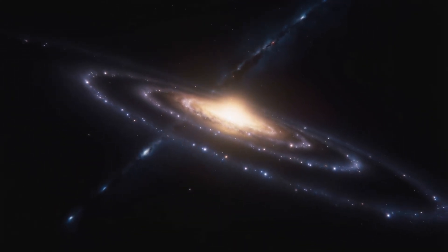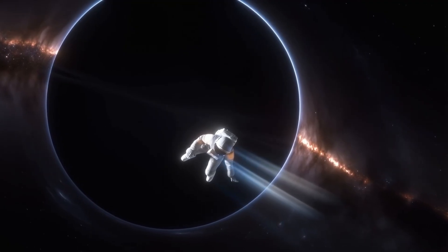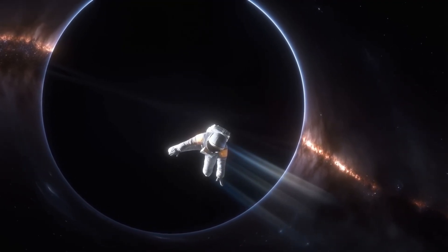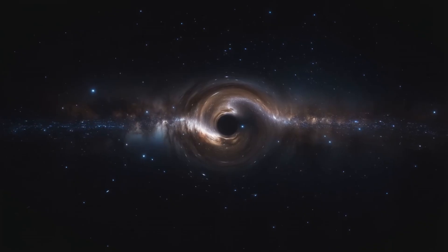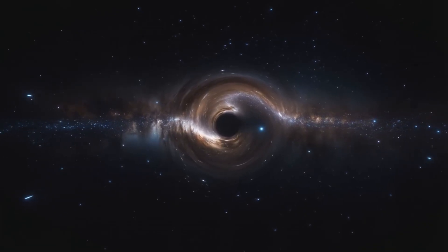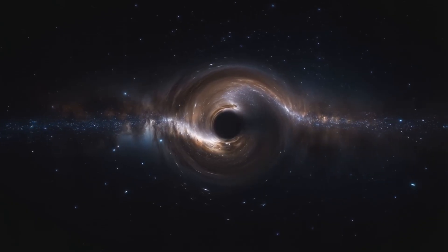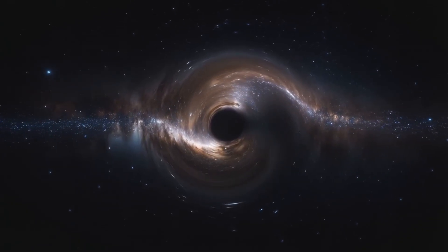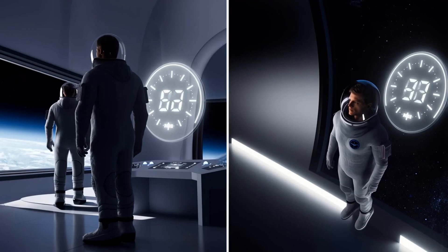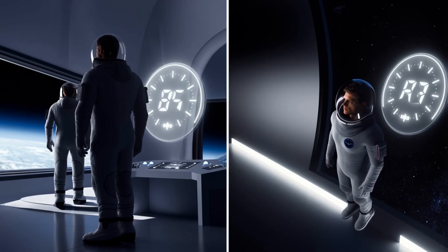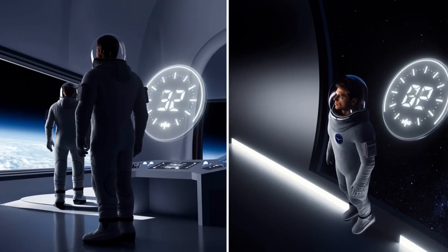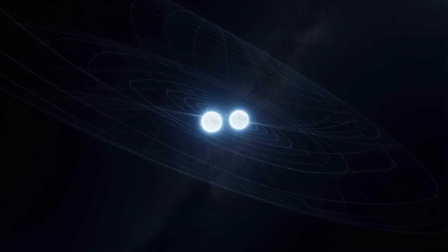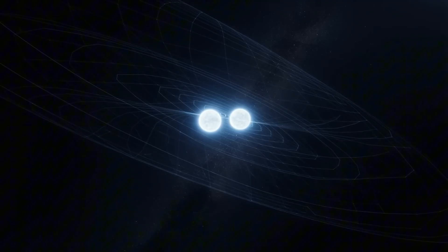And then we reach the edge of what we can see, the observable universe, a sphere roughly 93 billion light years in diameter, limited not by what exists but by what light has had time to reach us. Beyond this limit lies the unobservable, not empty space but potentially more galaxies, more stars, possibly even other universes if theories like cosmic inflation or the multiverse hypothesis are true.